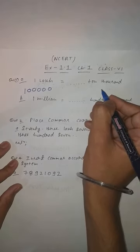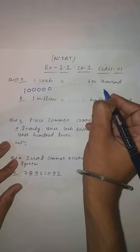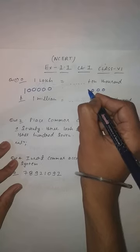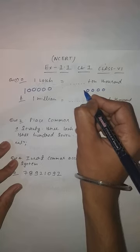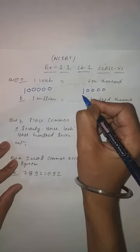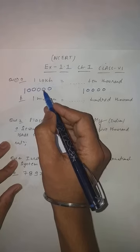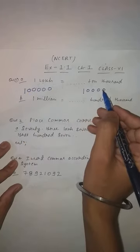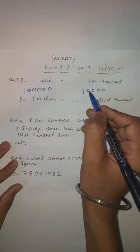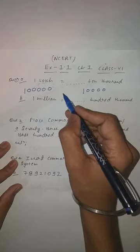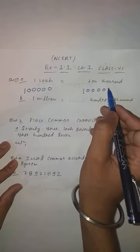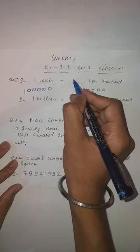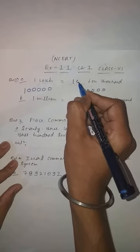Now write down 10,000 in its place value columns: 1s, 10s, 100, 1000, 10,000. You can see 1 lakh has 6 zeros and 10,000 has 4 zeros. So how many zeros are required? The answer is 10 — we will put 1 and 0 here.